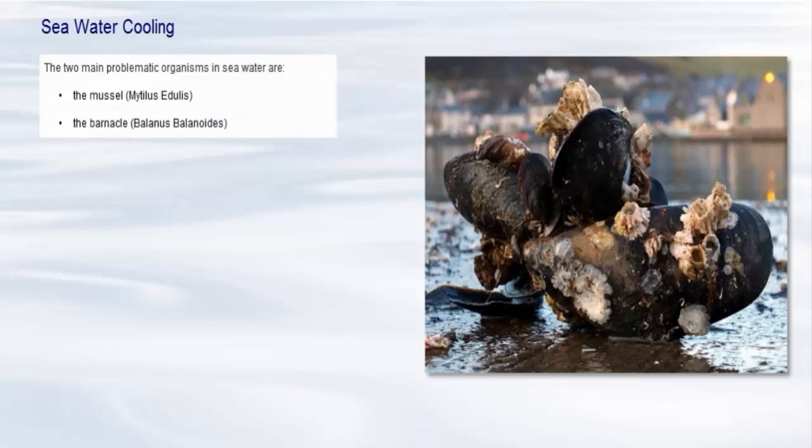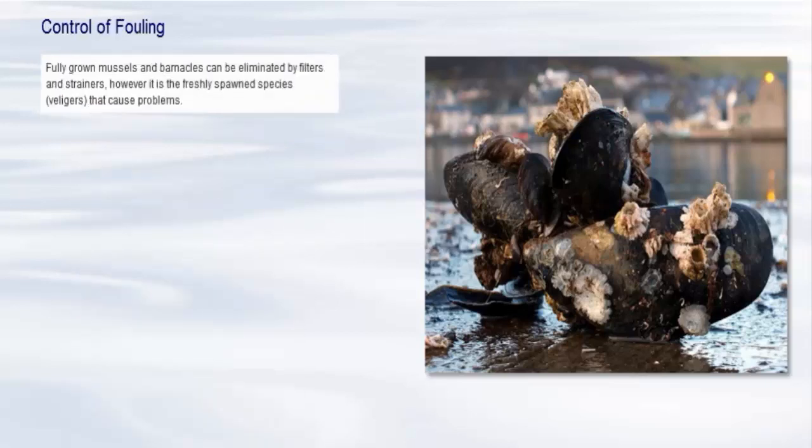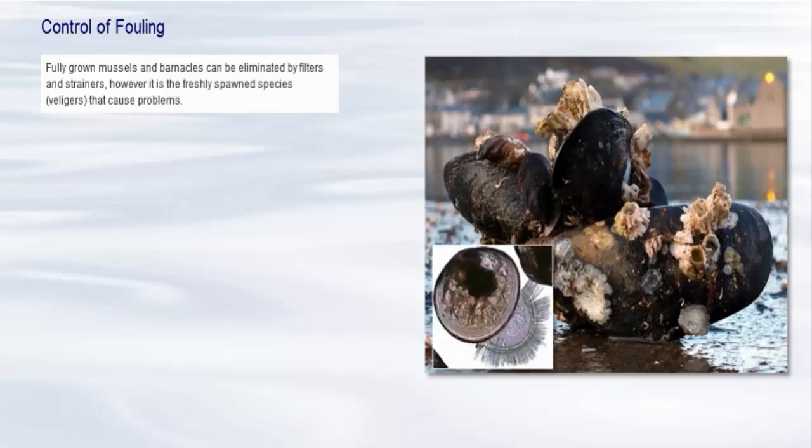These are common, shelled, filter-feeding forms of marine life found around the world. They can grow up to 10 cm in length and 5 cm in diameter and cause severe fouling where seawater is used as a coolant. Fully grown mussels and barnacles can be eliminated by filters and strainers. However, it is the freshly spawned species, veligers, that cause problems.